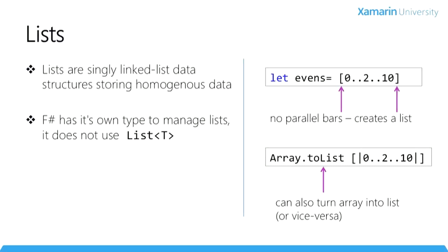The syntax used to create an F-Sharp list is similar to an array — we use brackets around a series of semicolon-delimited values or a range expression, but without the parallel bars. Lists are great for certain types of data access: they're dynamic in nature so you can add as many items as you like without defining a length. They have many of the same methods as arrays, but access time is a bit slower because the list must be traversed to find the data. F-Sharp provides methods to convert back and forth between lists and arrays.